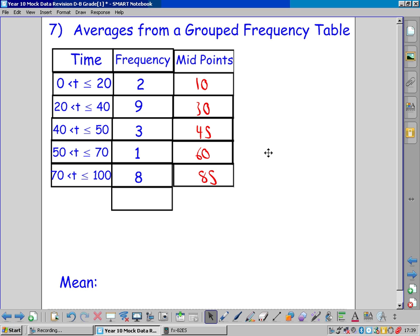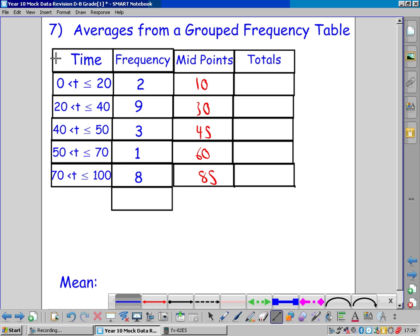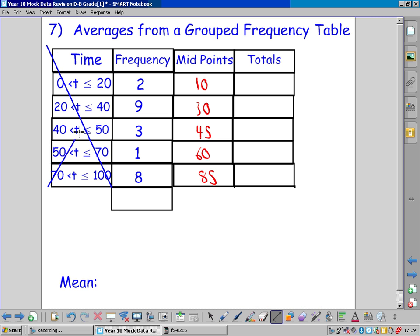Then we need to find the totals, our estimated totals. So now we can ignore these. This is finished with for the mean, and we multiply here.